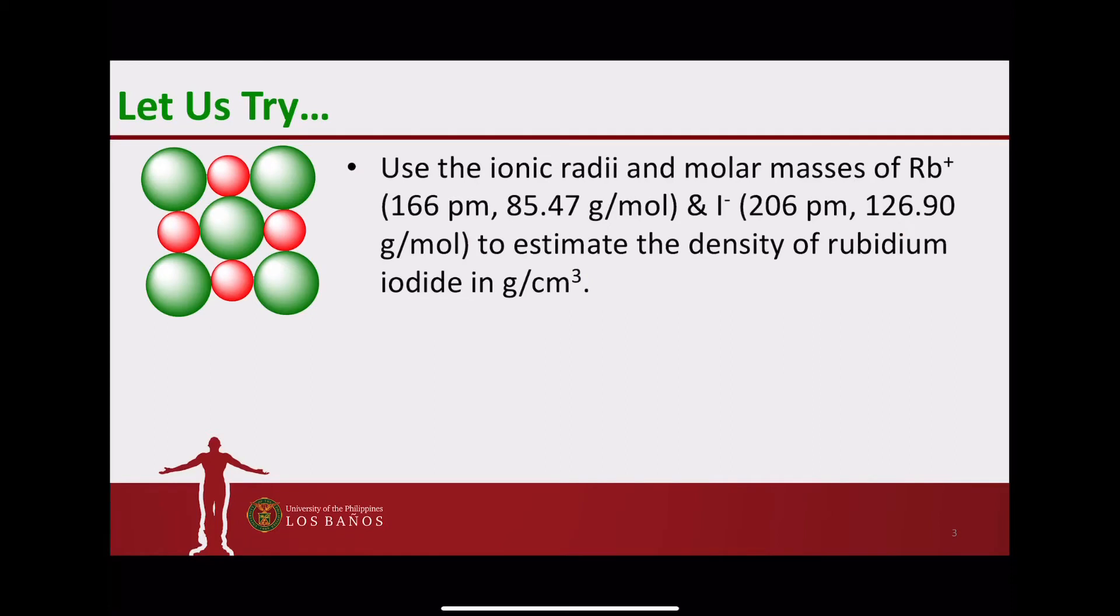Now for this question, we're going to use the ionic radii and molar masses of Rb+ and I- to estimate the density of rubidium iodide in grams per cubic centimeter. It is better to focus on one of the faces of the ionic structure. The arrangement of the cations and the anions are actually illustrated on the screen.